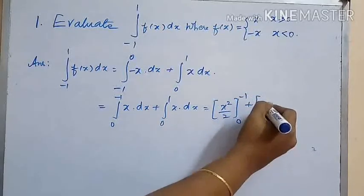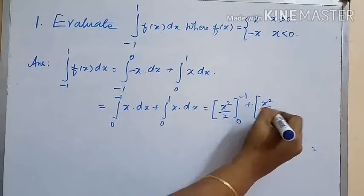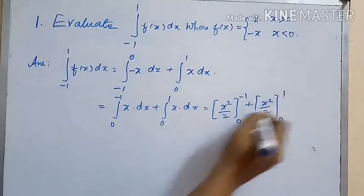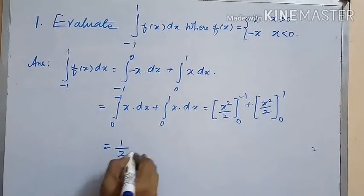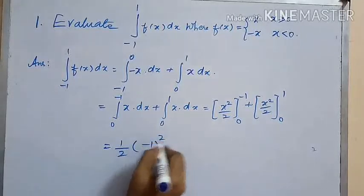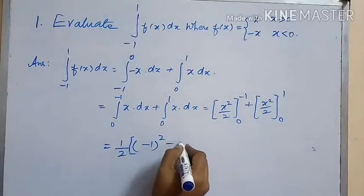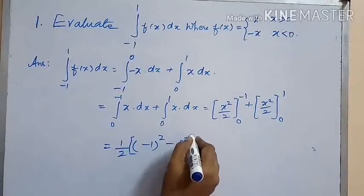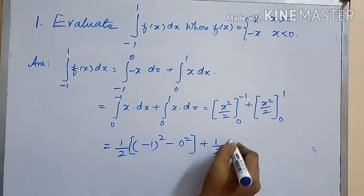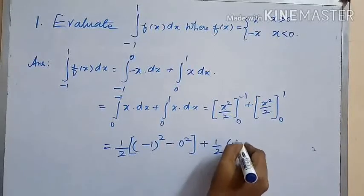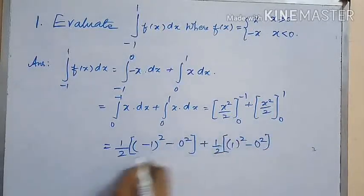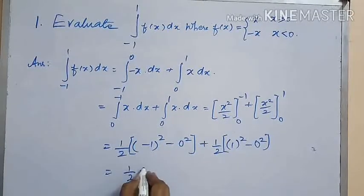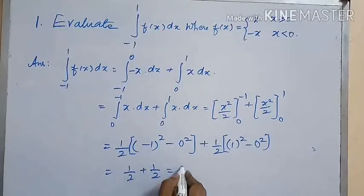Integrating, we get x²/2 within the limit 0 to −1, plus x²/2 within the limit 0 to 1. Substituting the upper and lower limits, we get ½(−1)² − 0² plus ½(1)² − 0², which gives ½ + ½ = 1.